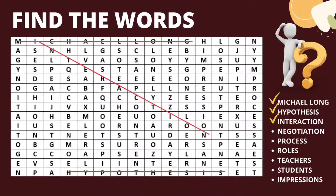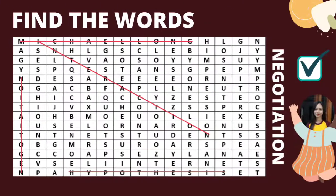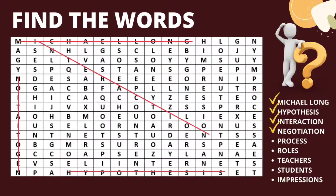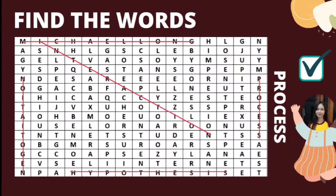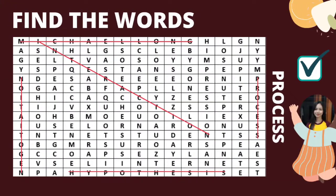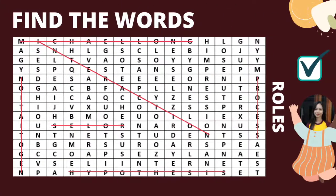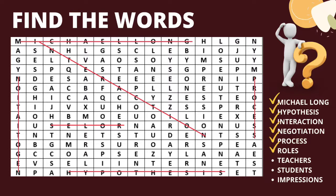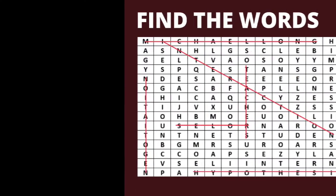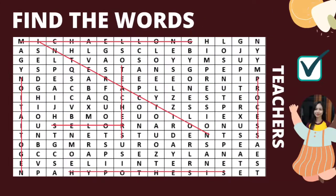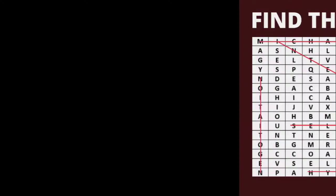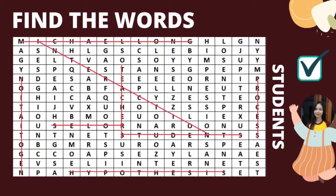The word interaction can be found here. The fourth word seems challenging, but here it is — negotiation. Can you find the word process? It's here. The next word is located here. I can't seem to figure out the next word. Can you help me? Oh, here's the word teacher. I feel like I already saw the word students. Here it is.